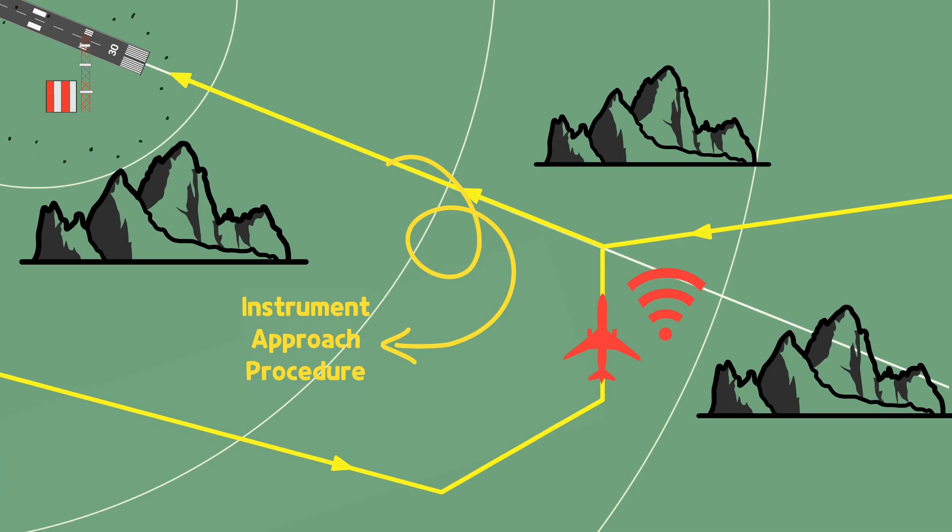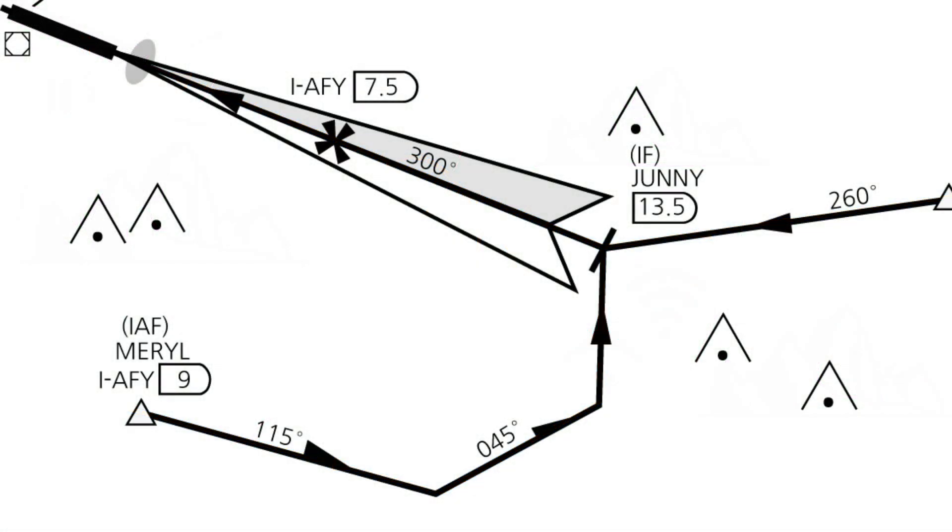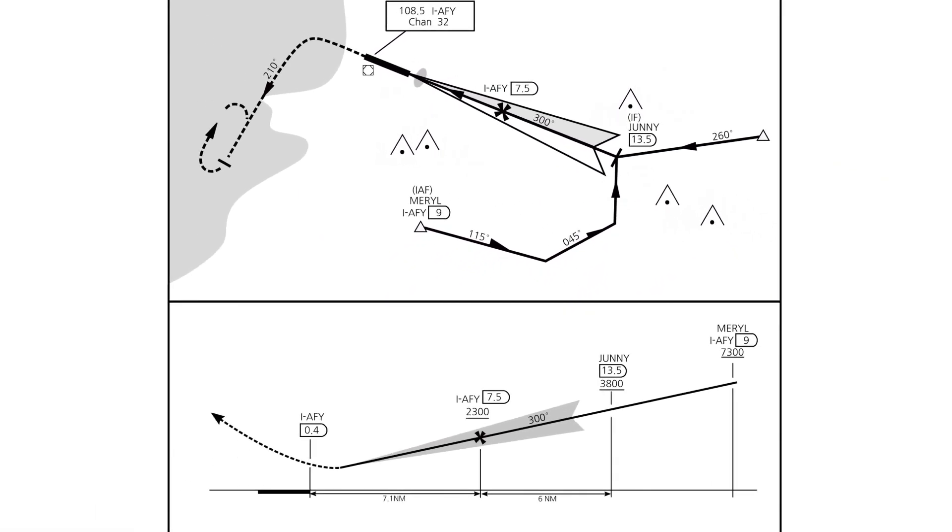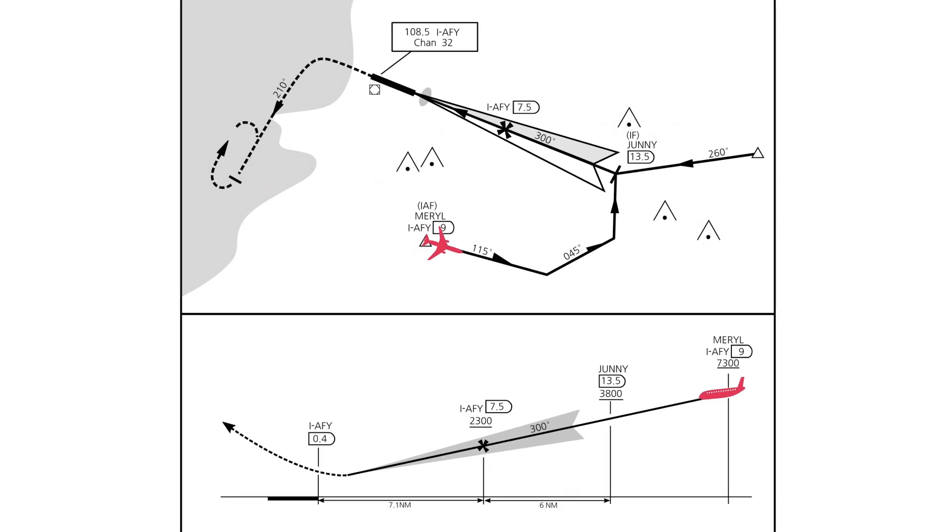That is, the approach procedure is required without exception even for aircraft that have attempted go-around. Although it takes time, since this procedure is the safest, after the go-around, the pilot should follow the approach procedure and re-approach.